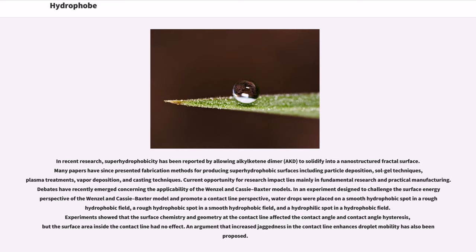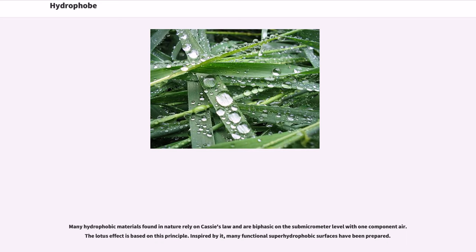Experiments showed that the surface chemistry and geometry of the contact line affected the contact angle and contact angle hysteresis, but the surface area inside the contact line had no effect. An argument that increased jaggedness in the contact line enhances droplet mobility has also been proposed.